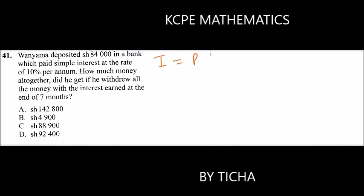I equals principle multiplied by the rate multiplied by time divided by 100. Wanyama withdrew the money after seven months, so the principle was 84,000, the rate was 10%, and since he withdrew after seven months, that's a fraction of a year which we represent as 7 over 12.